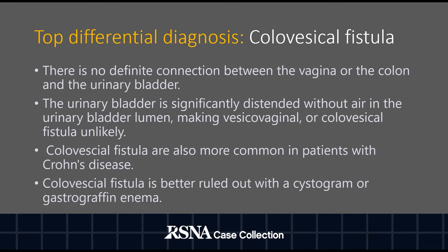Another differential diagnosis to consider is colovesical fistula. Here there is no definite connection between the vagina or the colon and the urinary bladder. The urinary bladder is significantly distended without air in the urinary bladder lumen, making vesicovaginal or colovesical fistula unlikely. Colovesical fistulae are also more common in patients with Crohn's disease and are better ruled out with a cystogram or gastrografin enema.